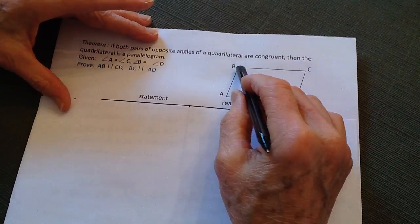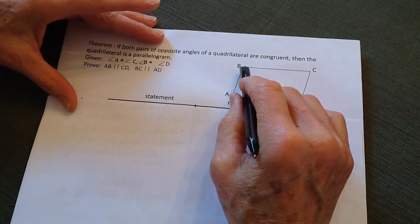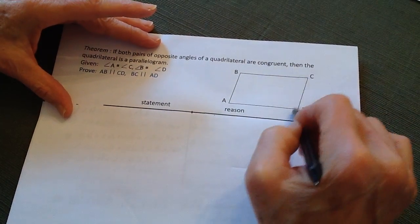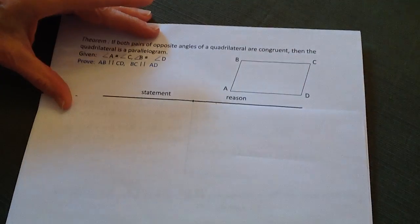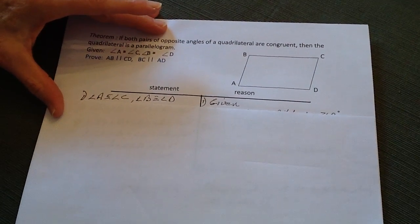then these two lines right here are parallel, and if we know that b plus c equals 180 degrees, then we know that this line and this line are parallel,